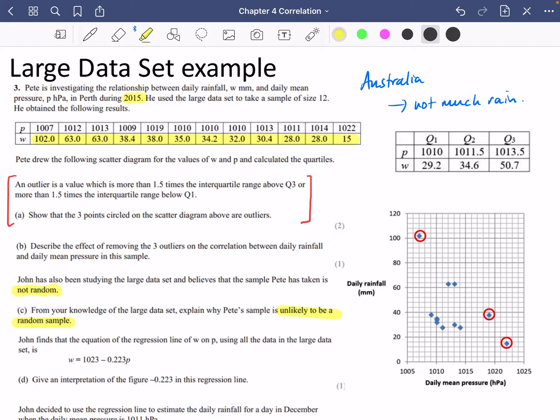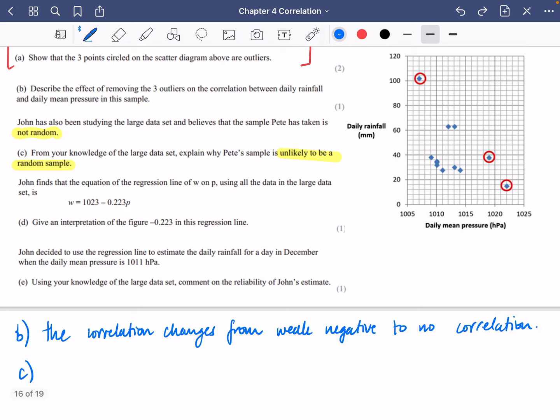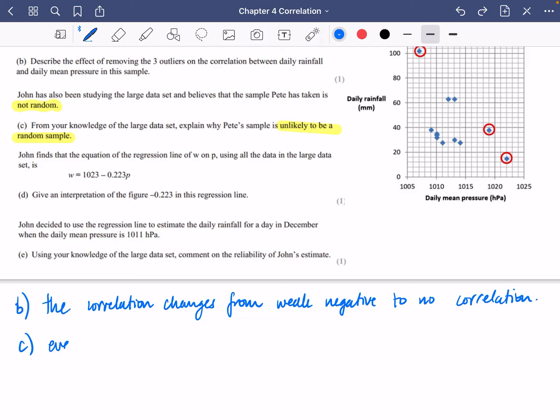So it seems really unlikely that it's going to be raining on every single day when in Australia we don't really think of it as a rainy place. Let's write that down. From your knowledge of the large data set explain why Pete's sample is unlikely to be a random sample. Every day has rain and many days for Perth in the large data set have zero millimeters of rain. So it doesn't appear random.